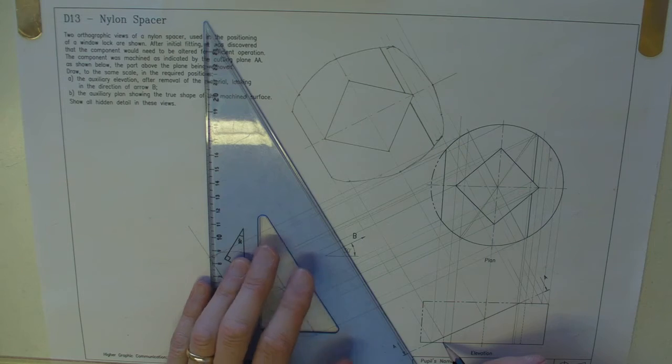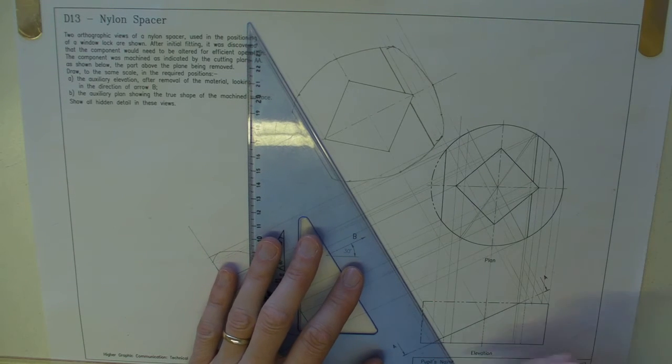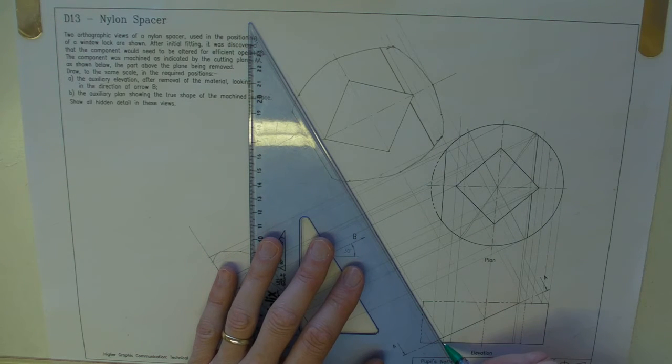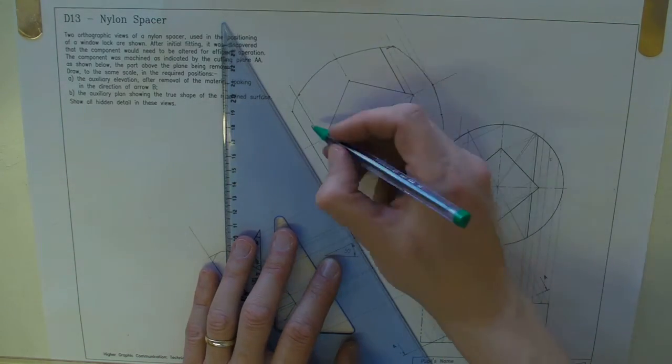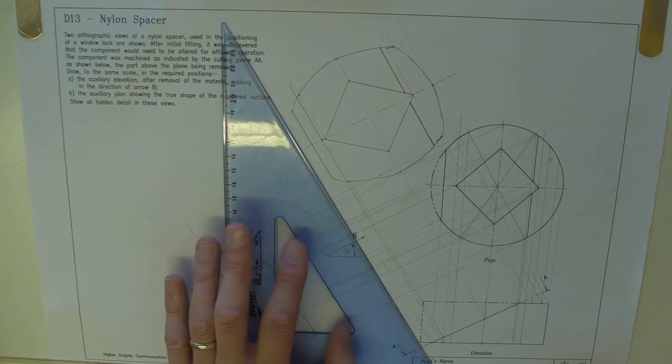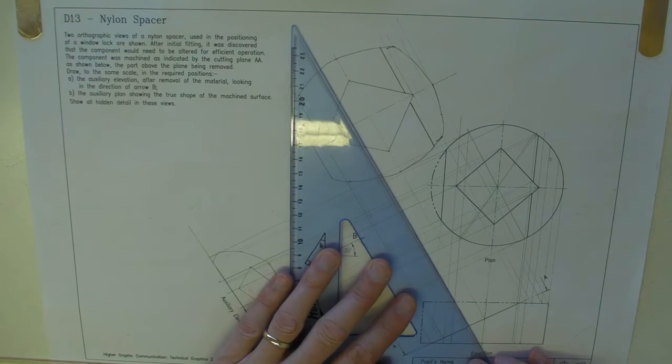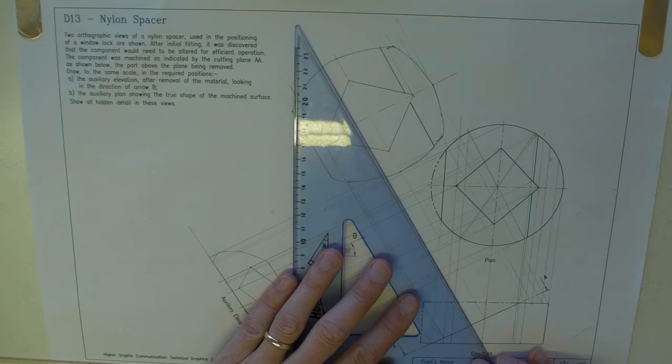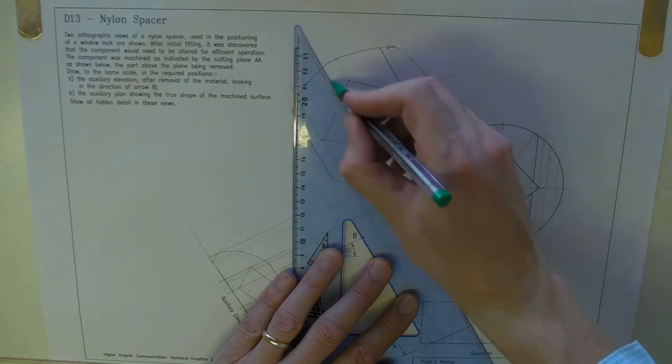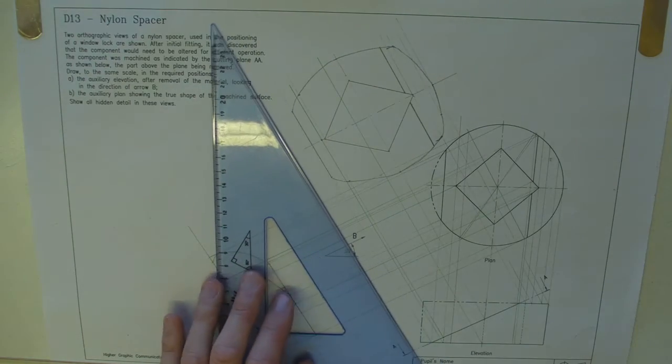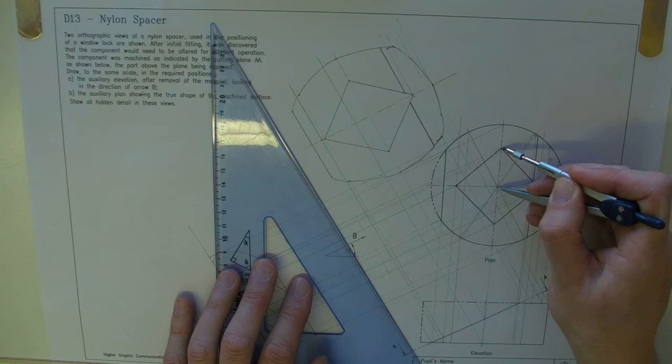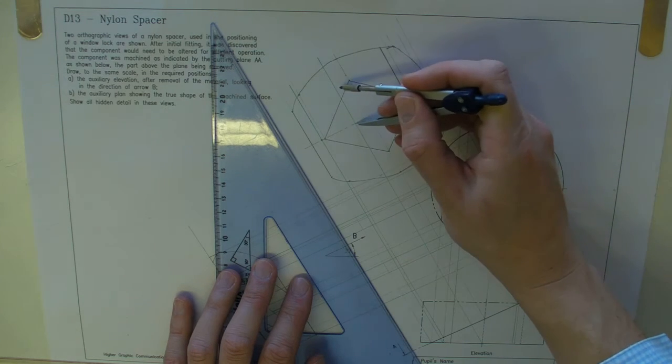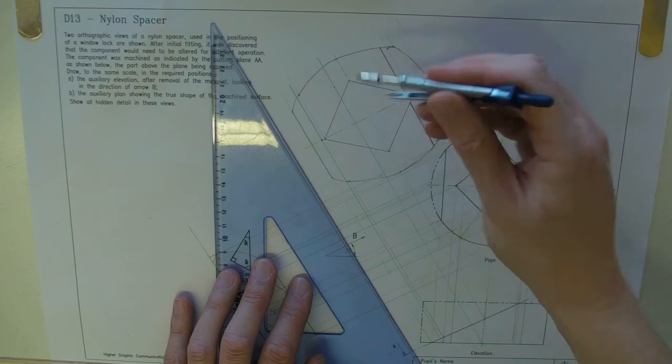So on the lower surface, using my green pen this time just to show you, I'm going to project up there. So that means that there is a lower point of that cutout up here. Again, the size is the same as this. So I'll map that on there and there.